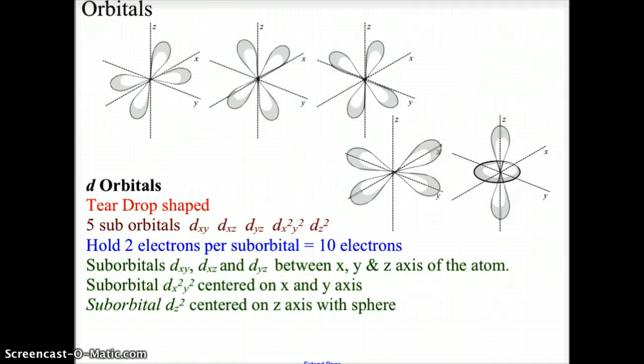As we jump up to the D orbitals, which are found in the transition metals, these also are teardrop in shape. There are five sub-orbitals. There's the DXY, which is actually between the X and Y axis. There's the DXZ between the X and Z axis and the DYZ between the Y and Z axis. There's also the DX2Y2, which is centered on the X and Y axis and then there's the DZ2, which is centered on the Z axis. Each of these sublevels can hold two electrons, making a grand total of ten electrons in the D orbitals.